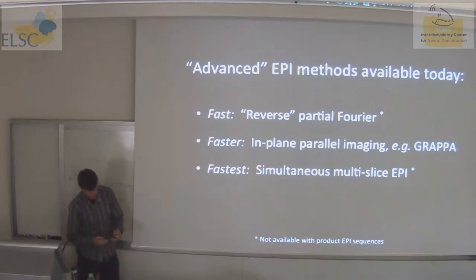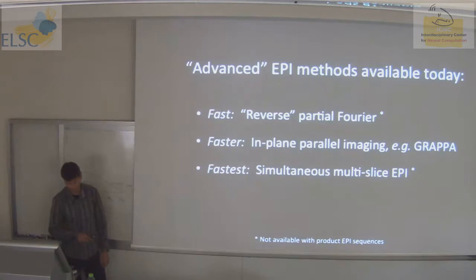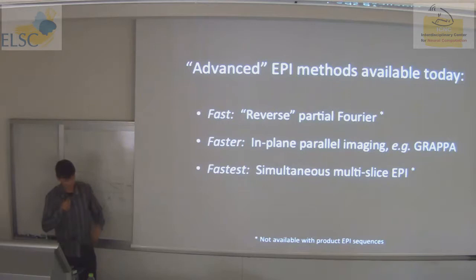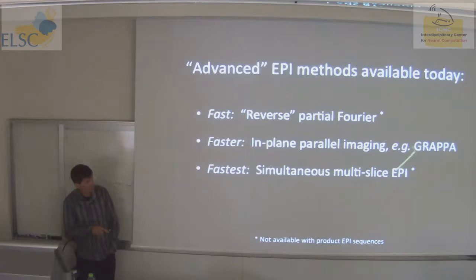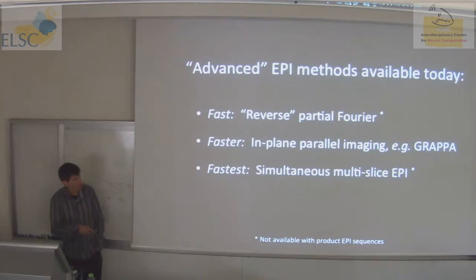I'm going to shift gears a little bit this afternoon. I'm going to revisit partial Fourier again in a slightly different fashion, and look at Grappa again as a comparator. The Grappa method is really a philosophical approach to encoding spatial signals — it's a family of methods, much like EPI has become a generic brand for different ways of doing much the same thing.